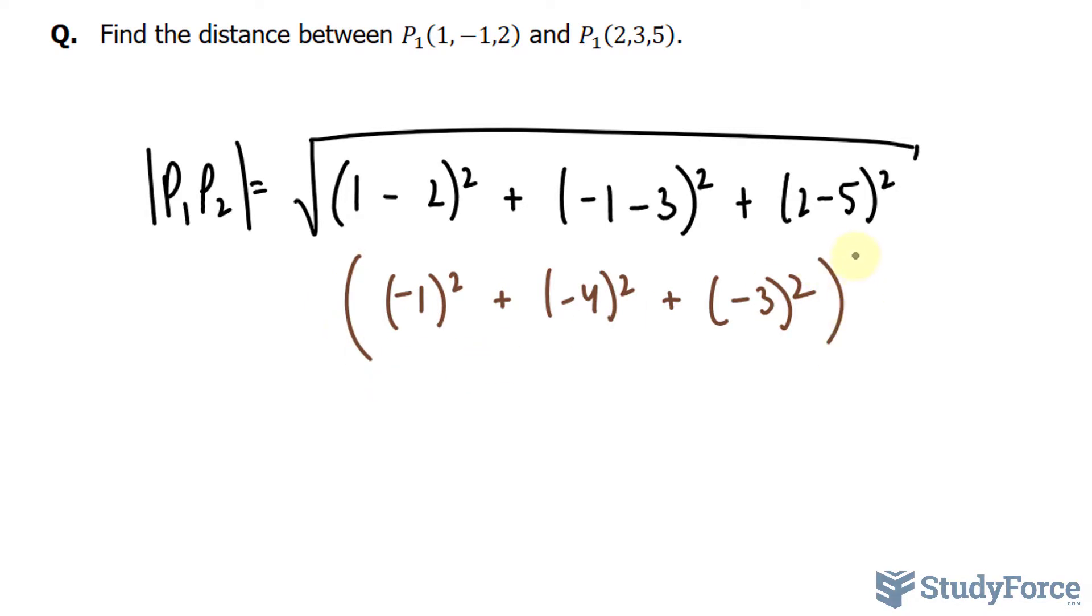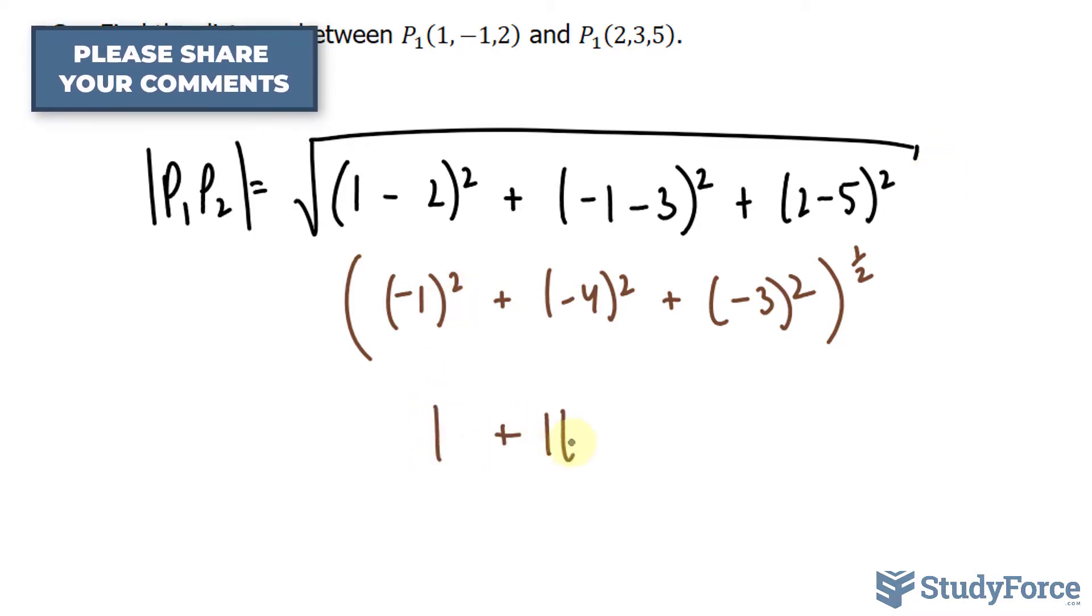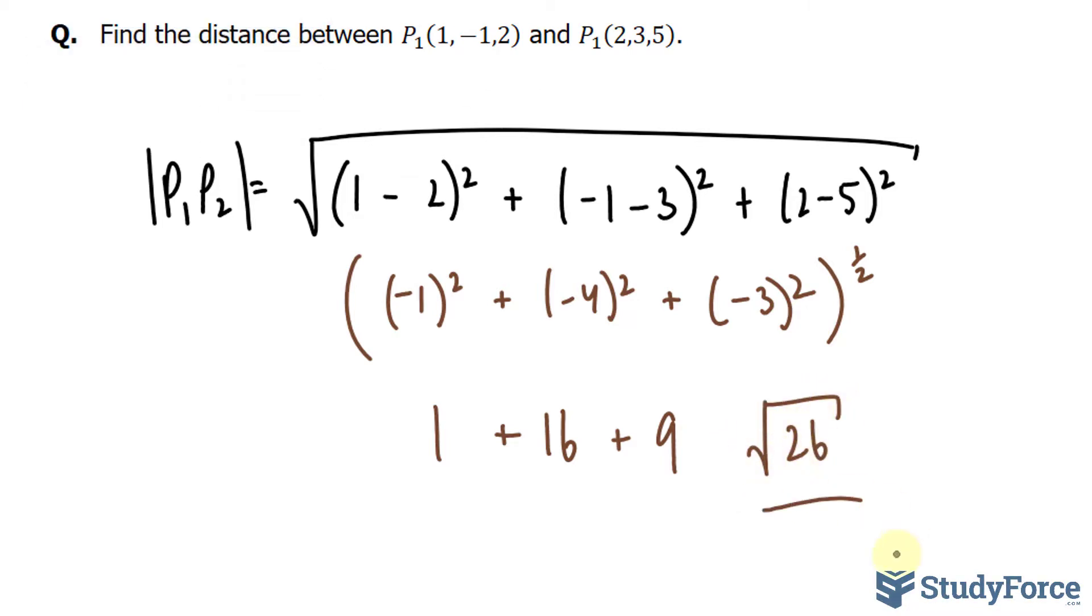All of this is being raised to the power of 1 over 2, or the same thing as the square root. 1 plus 16 plus 9 is equal to 26. The square root of 26 is the distance between the two points.